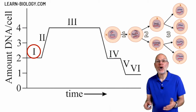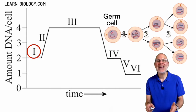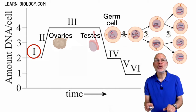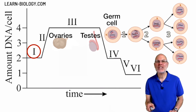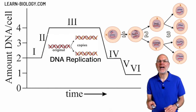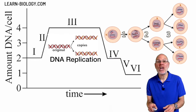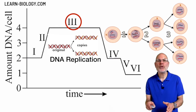At Roman numeral I, on the left, we have the DNA level in a cell that's about to undergo meiosis. That cell would be a germ cell. In an animal, you'd find these germ cells in the testes of a male or in the ovary of a female. Before that germ cell divides, it replicates its DNA, resulting in a cell with twice the amount of DNA, represented by Roman numeral III.